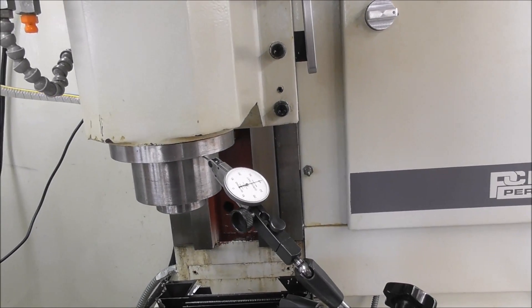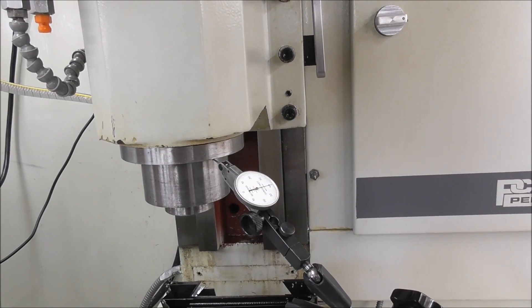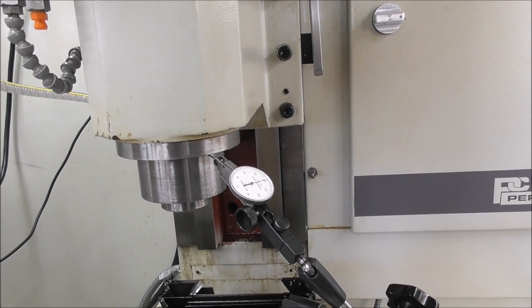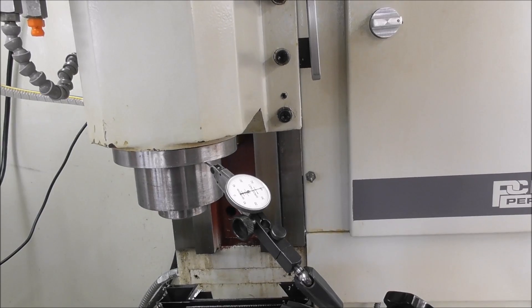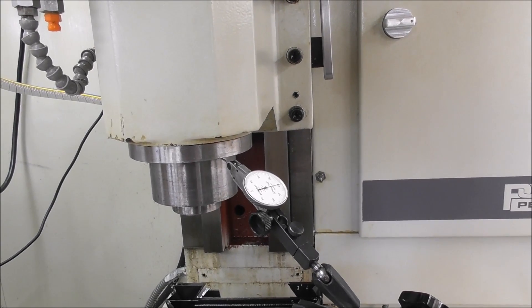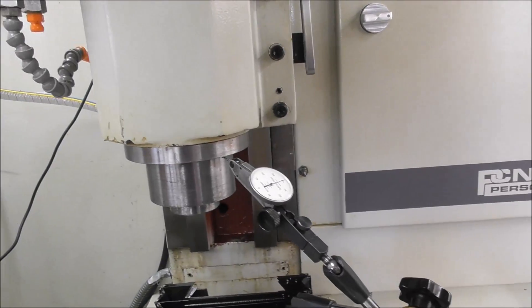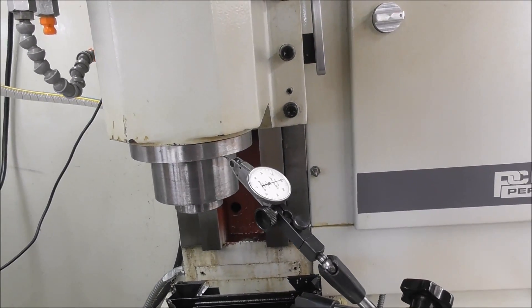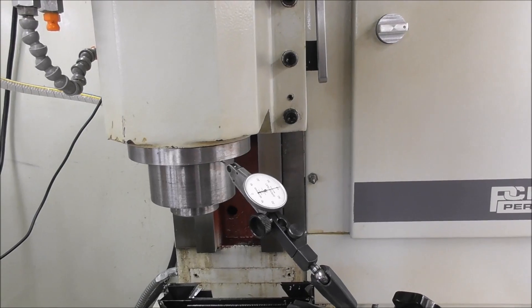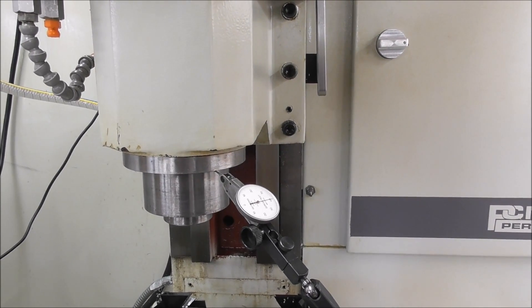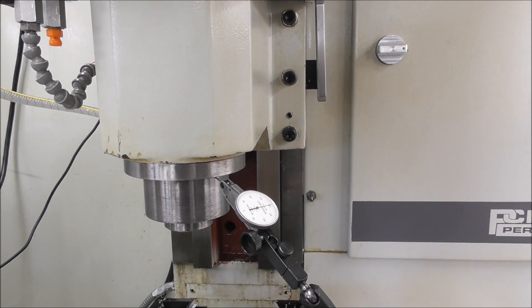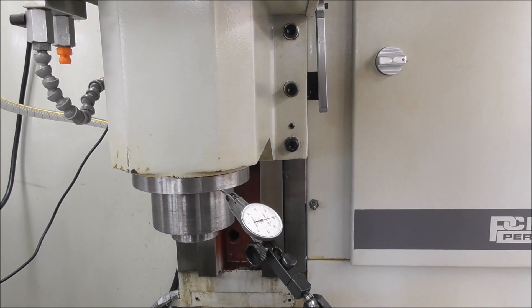How you ascertain that is by using the dial indicator and measuring the loss motion so you get to a threshold where the loss motion suddenly starts to increase and that's when the gib is gripping the slideway too tight. Then you just back it off about half a turn of the adjusting screw. The bottom and the top screws need to be adjusted and then tightened in the new position.